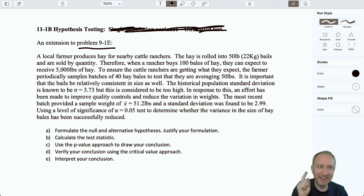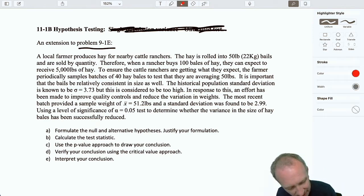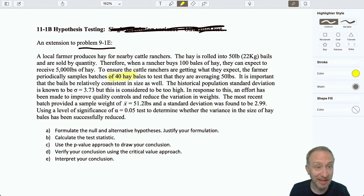We're extending a previous one where we had already done the test on the mean of some population. Now we're going to look at the variance or standard deviation of that same problem. So here we're looking at a local farmer that produces hay for nearby ranchers. The hay is rolled into 50 pound bales and sold by quantity. So when a rancher buys 100 bales of hay, they can expect to receive 5,000 pounds of hay. To ensure the cattle ranchers are getting what they expect, they take samples of 40 hay bales. So that sounds like a useful piece of information or sample size.